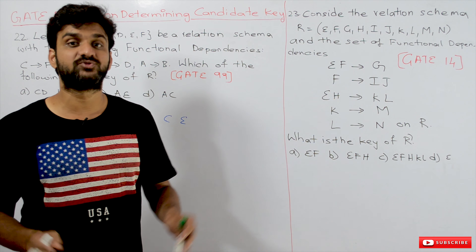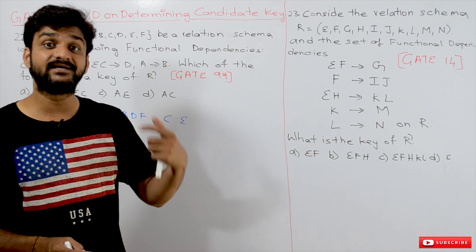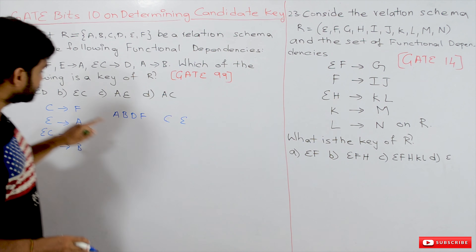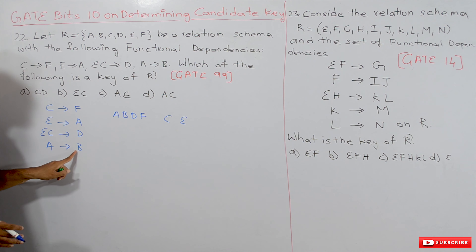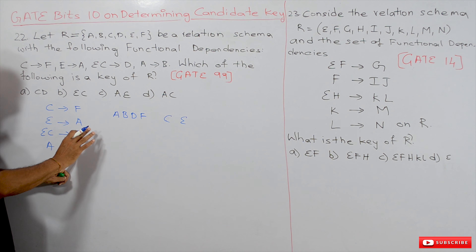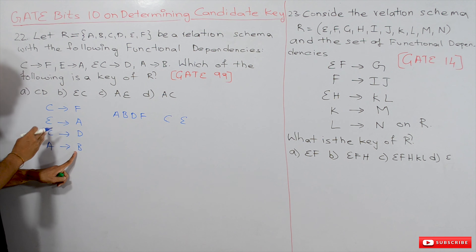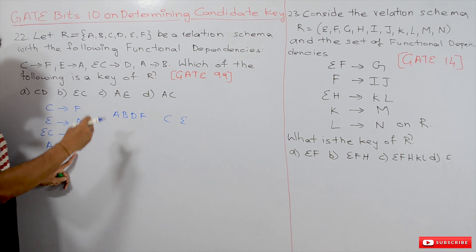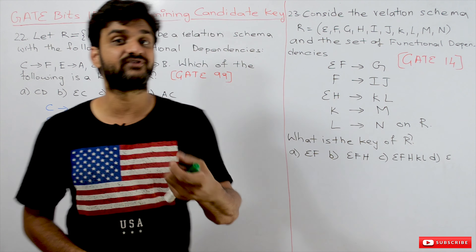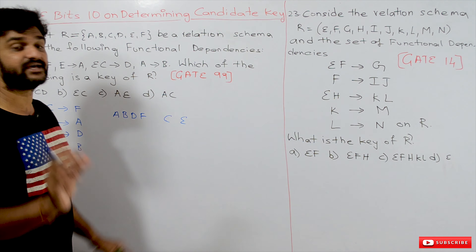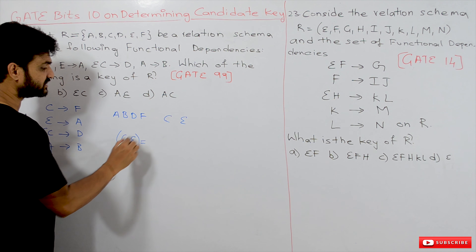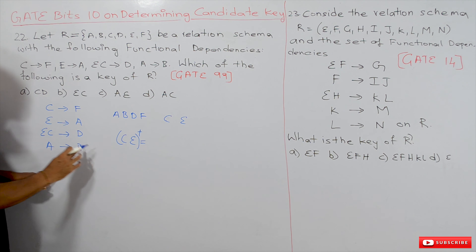The logic is: if some attributes are not there on the right-hand side of the functional dependencies, we can never determine those attributes unless they are involved on the left-hand side. This point is very important. We can never determine C and E unless they are on the left-hand side of some combination.